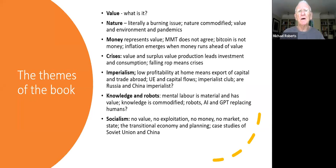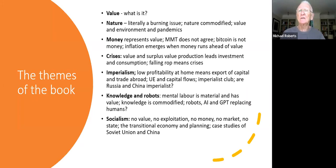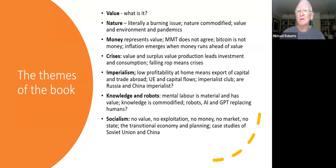The first chapter is about nature. We start with nature because it's literally a burning issue. We've seen a tremendous development of commodification of nature — turning natural resources, all the species of the world, into something that can be used by capital to increase profit. That has led to serious developments threatening the very existence of the planet, including pandemics, the destruction of species, and climate change.